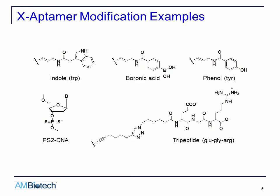Here is a sampling of some of the modifications we have used. We have used indoles, boronic acids, phenols, phosphorodithioate substitutions, and even larger modifications like this tripeptide. Each of these modifications add chemical functionality not present in normal DNA, and it is these modifications that make X-aptamers a compelling alternative to antibodies. Modifications must not interfere with PCR; as such, R modifications are added at locations that don't significantly affect the ability of DNA to form secondary structures. Thus, phosphorodithioate substitution is an analog of phosphate, and the remaining four are nucleobase modifications attached to the non-base-pairing face of deoxyuridine.